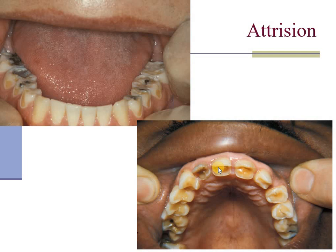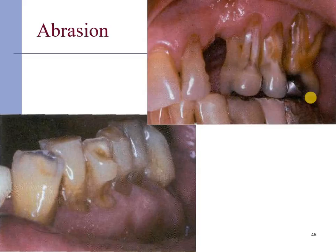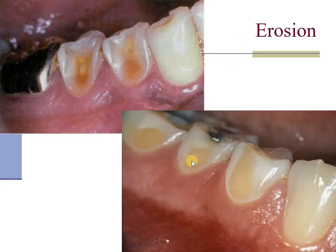Attrition may be physiological — due to constant chewing or clenching of the teeth — or pathological, such as night grinding or bruxism. Abrasion, on the other hand, is a pathological phenomenon where there is mechanical abrasion of the cervical portion of the tooth due to improper tooth brushing. Erosion is a chemical phenomenon in which regurgitation or carbonated drinks may lead to demineralization and erosion of the tooth surface.